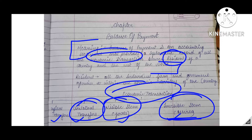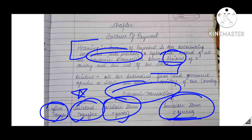The third part is unilateral transfers, which refers to one-sided transactions. For any goods, gifts, or grants, a transaction can happen from only one side. For example, if you receive a gift from your friend on your birthday, that is a unilateral transfer — he is not expecting anything from you. So gifts or grants which are one-sided are also included in economical transactions. This is a broader concept.